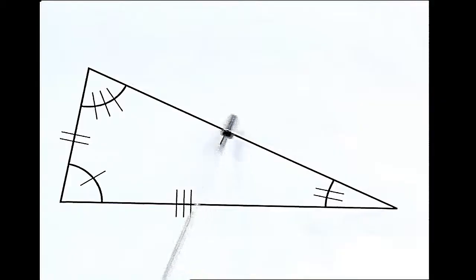This is a scalene triangle. In this triangle, all the markings are different. Therefore, all the sides are different. This side has one marking, this side has two markings, this side has three markings. If all the sides are unequal, then all the angles are also unequal.